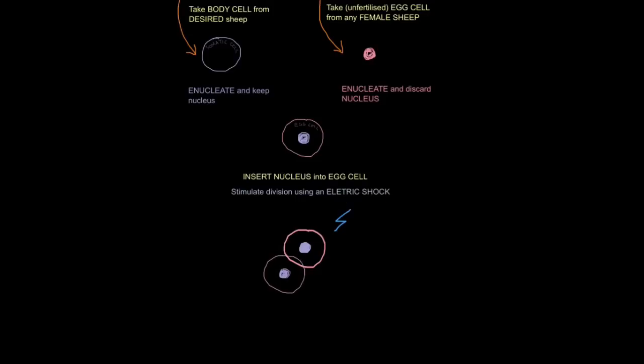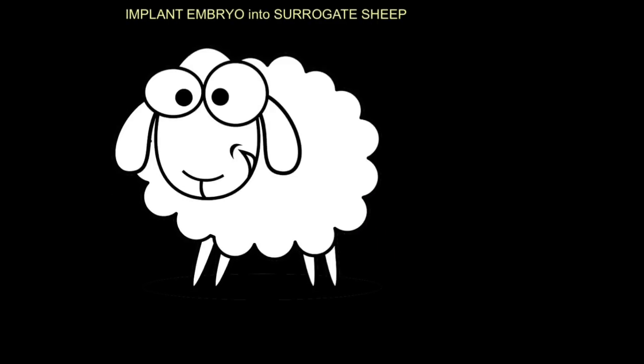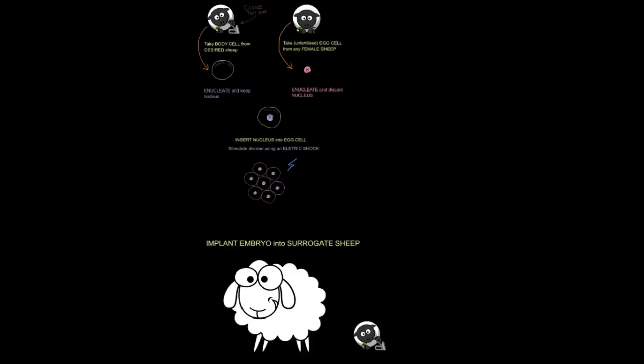Once this happens, the cell will divide to form an embryo. Now what we do is implant the embryo into a surrogate sheep and then, six months later, the cloned sheep emerges. So just to recap, take the body cell from a desired sheep and take the egg cell from any female sheep. Take the nucleus from the desired sheep and transfer it to the enucleated egg cell. Then give the egg cell an electric shock and stimulate division so it becomes an embryo. Then implant that embryo into a surrogate sheep and six months later, you have your cloned sheep.